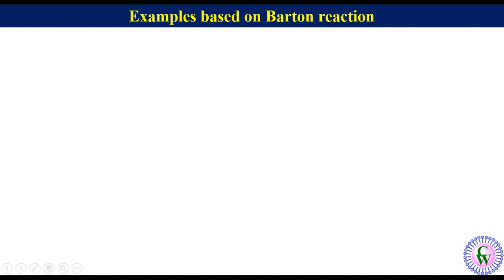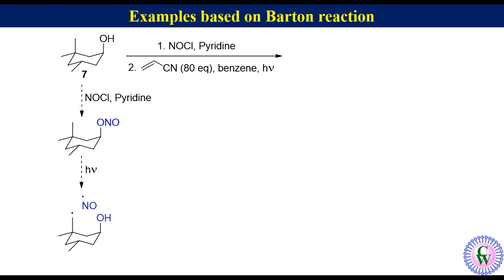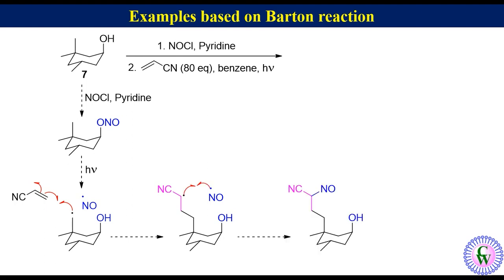Example number 7. In this example we have to predict the structure of the product when compound 7 is treated with nitrosyl chloride in pyridine and the resulted product undergoes photolysis in benzene in the presence of 80 mole equivalents of acrylonitrile. Reaction of compound 7 with nitrosyl chloride gives this nitrite compound, which after photolysis gives an alkyl radical and NO radical. This alkyl radical adds to the acrylonitrile to produce another alkyl radical. Combination of this alkyl radical and NO radical produces nitroso alcohol, which tautomerizes to produce the corresponding oxime.